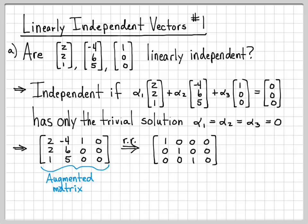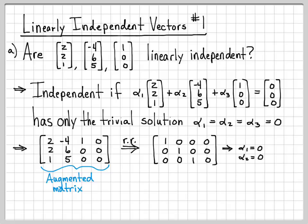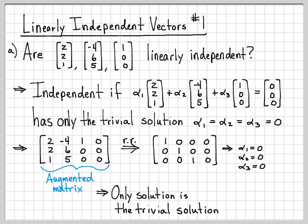After performing row reduction steps, we end up with a row-reduced matrix. When we look at this, there is a pivot in every single column, so there are no free variables — just three basic variables: alpha 1, alpha 2, and alpha 3. The first row says alpha 1 = 0, the second row says alpha 2 = 0, and the third row says alpha 3 = 0. So the only solution is the trivial solution, which means these vectors are linearly independent.